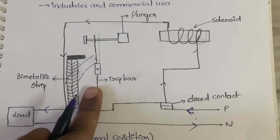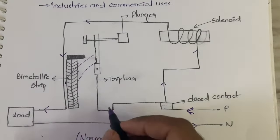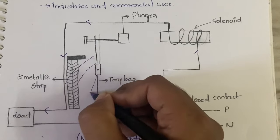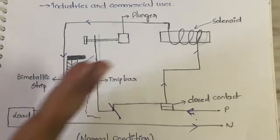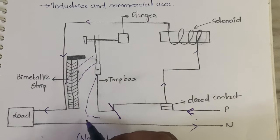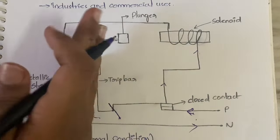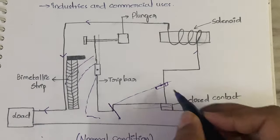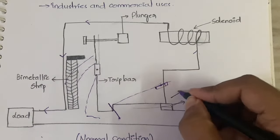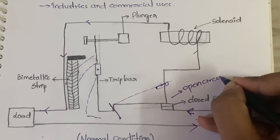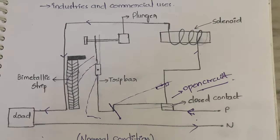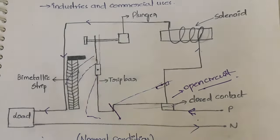When the bimetallic strip hits the trip bar, the trip bar will move from its position — it will displace. The contact that was closed will be broken. The trip bar displaces and this closed contact opens up, so it becomes an open circuit — no current will flow. As a result, the load is safe and no harm is done to it.